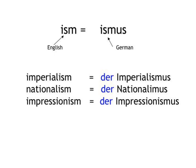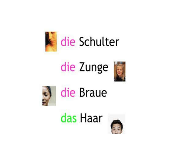And of course, a lot of words have retained enough similarity in their parallel historical evolution that you can guess their meaning. So if we continue with our body words, we have for example: die Schulter — shoulder, die Zunge — tongue, die Braue — brow, das Haar — hair, and so on.